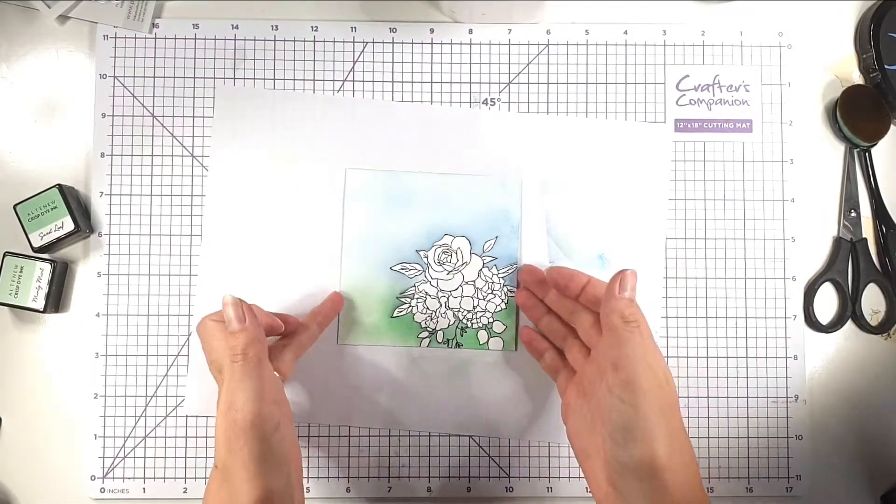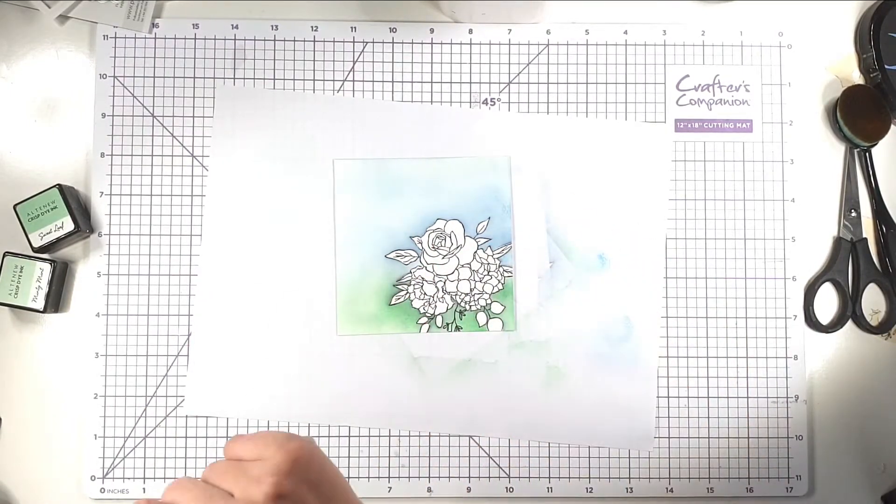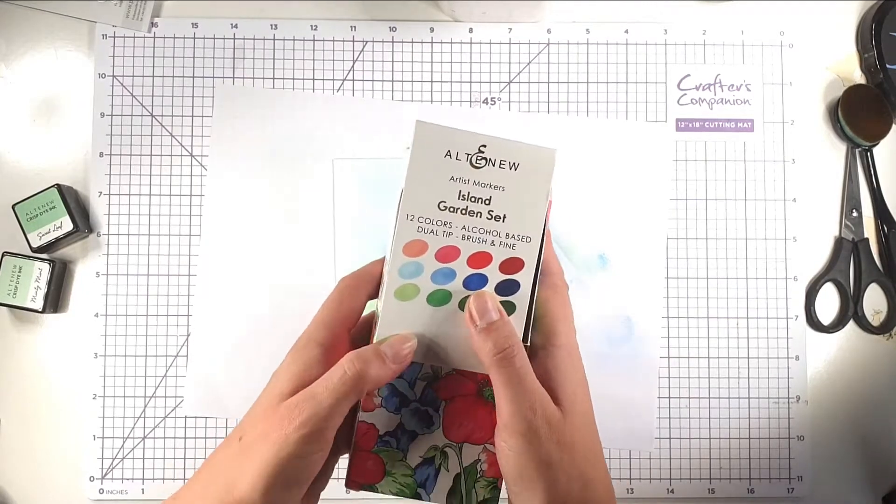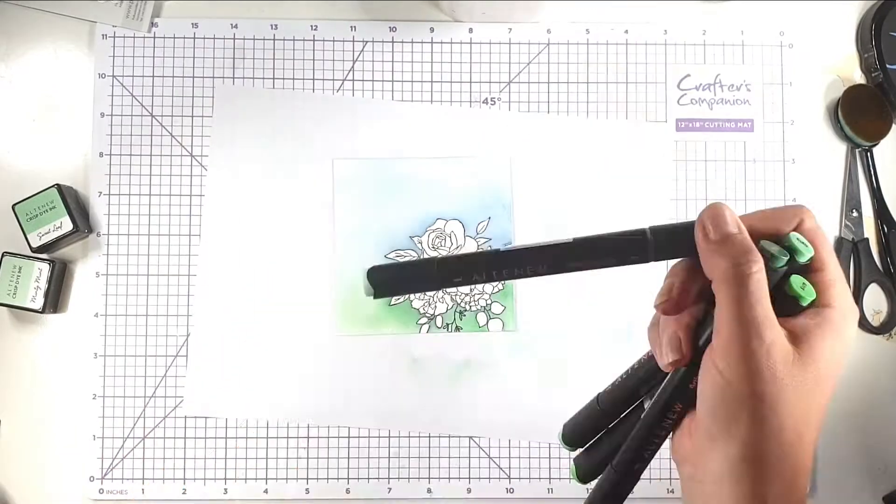So you can see now that my flower is completely surrounded by the colour but doesn't have any colour on it. And then I'm just going to use this Island Garden set of Altenew markers to colour in, so I'm going to start with the greens for the leaves.